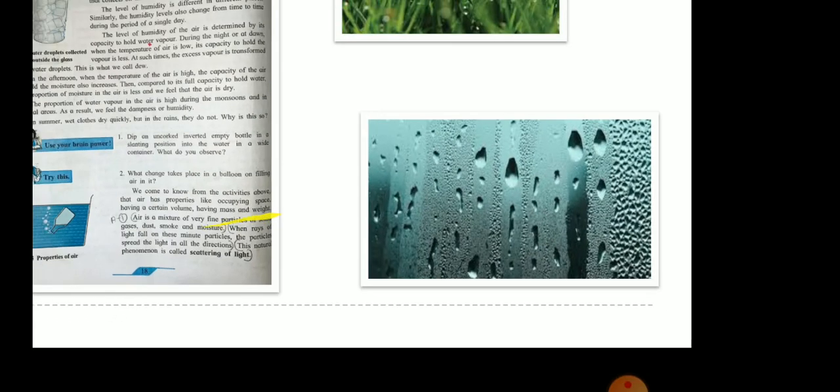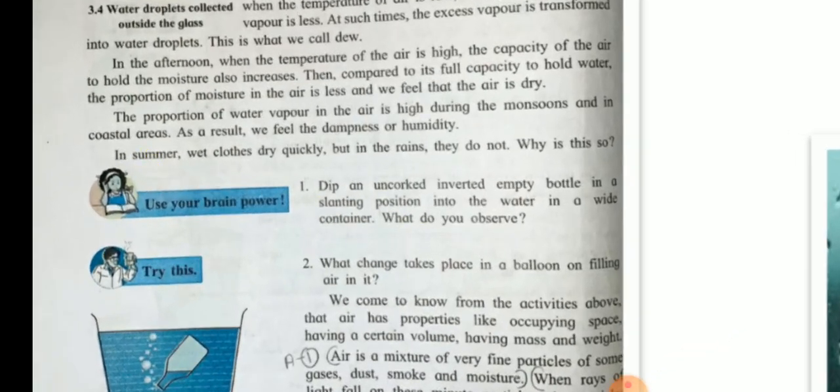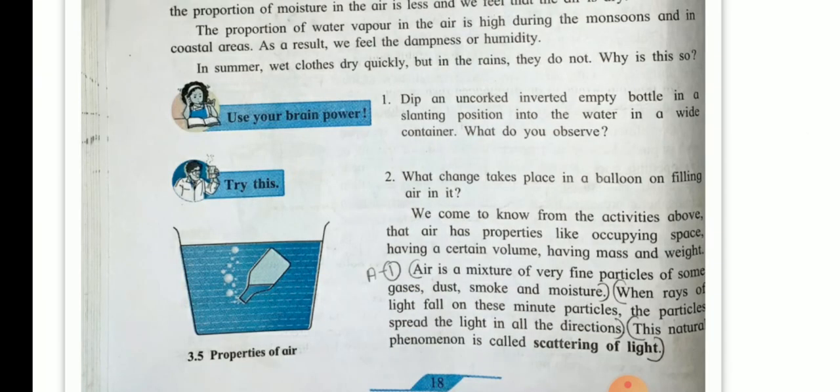In summer, wet clothes dry quickly but in the rains, they do not. Why is it so?